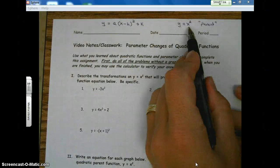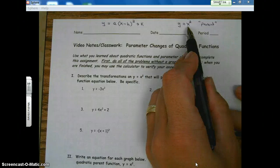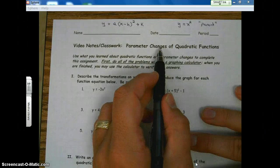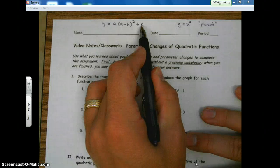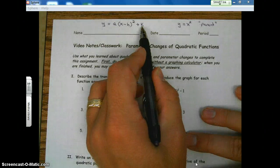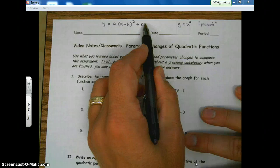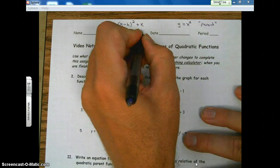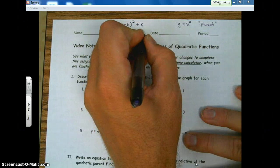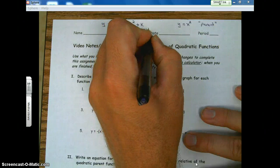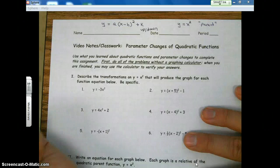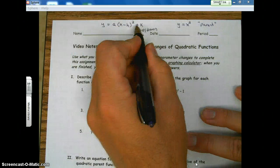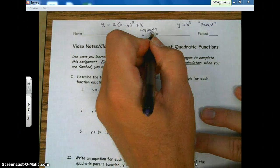Well, what we're going to do is transform the parent using parameter changes. Three parameters we're going to look at: a, h, and k. The number on the end, k, outside of the parentheses, moves the parent up and down. So k moves the parent up and down. If it's plus, it moves it up. If it's minus, it moves it down.